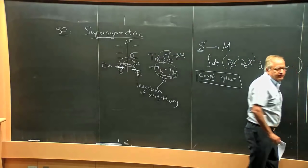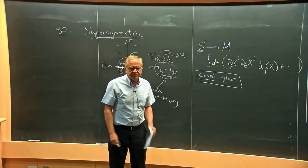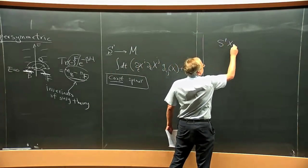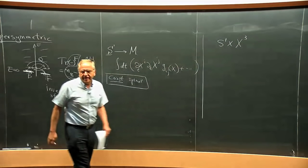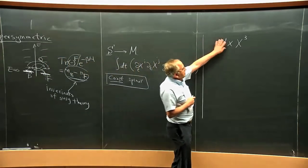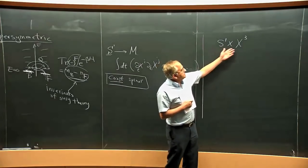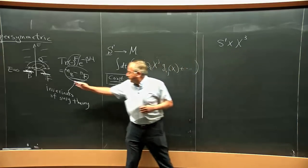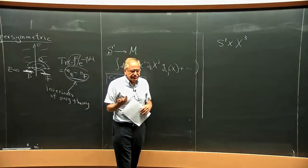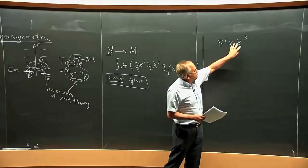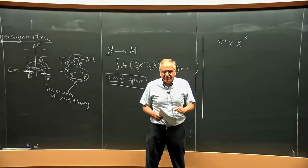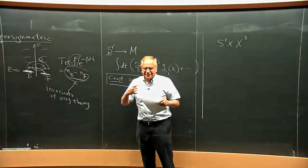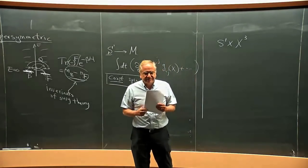One might say: why don't we generalize? We know there are supersymmetric theories in other dimensions, for example in four dimensions. Take time to be a circle and space to be a three-dimensional manifold. Do the same thing — study the theory on this space, get ground states, and associate to the three-manifold the number of bosons minus the number of fermions. So for whatever supersymmetric theory you have, it becomes a machine where you give a topological invariant for the three-manifold, because these numbers don't change under perturbations of the metric.